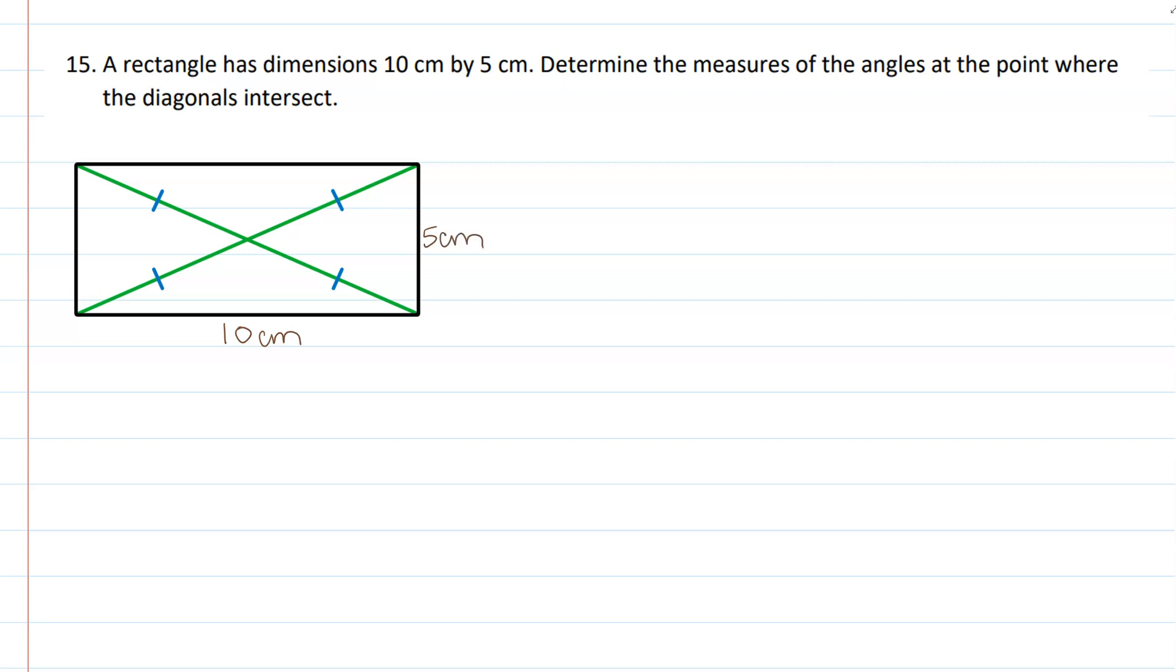Okay, and the question is asking for us to find the measure of the angles where the diagonals intersect. And as you know, those are what we call vertical angles, and vertical angles have the same measure. So we have this vertical angle pair, right? So you have two pairs of angles that have the same measure.